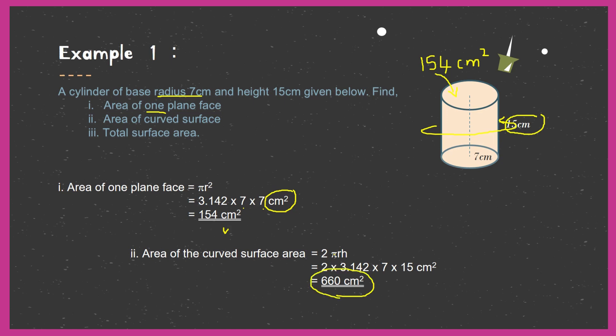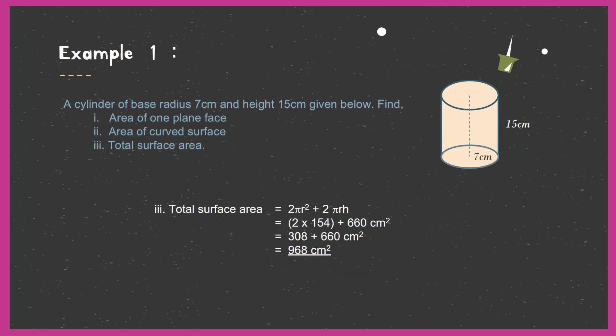Now we know the area of one circle is 154 cm² and the area of the curved surface is 660 cm². For the total surface area, we use 2πr² + 2πrh. Since πr² equals 154, we multiply that by 2 to get 308, then add 660. So 308 plus 660 equals 968 cm². The total surface area of this cylinder is 968 cm².